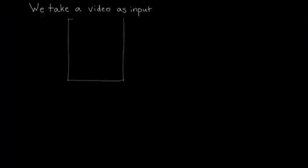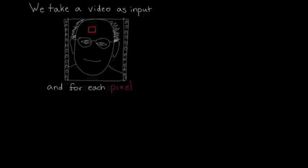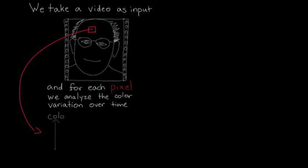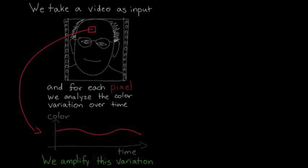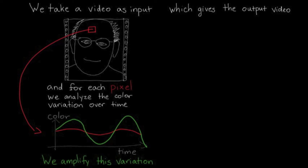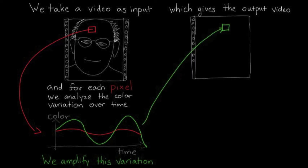These changes are hidden in ordinary videos we capture with our cameras and smartphones. Given an input video, for each pixel we analyze the color variation over time and amplify this variation, which gives us a magnified version of the video.